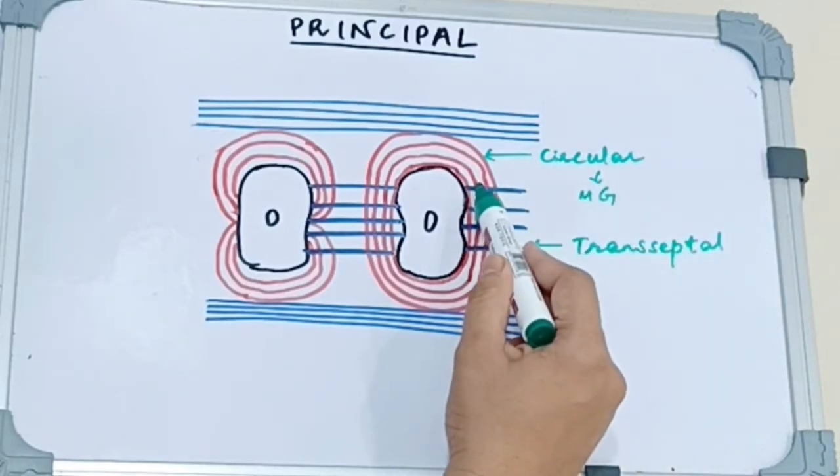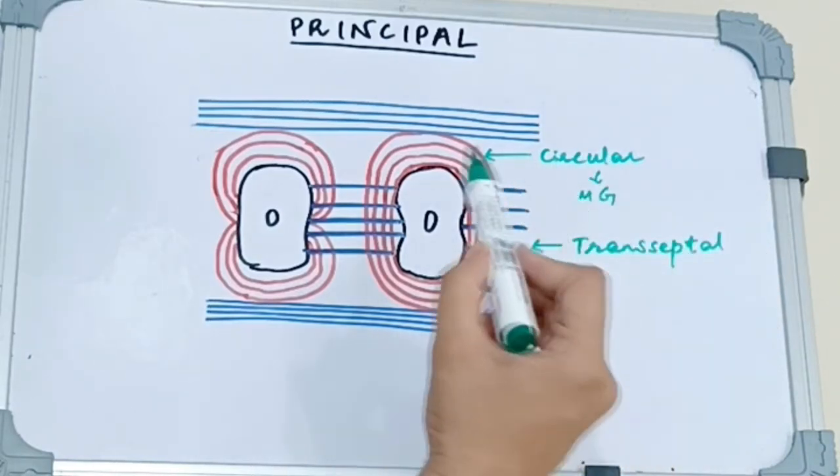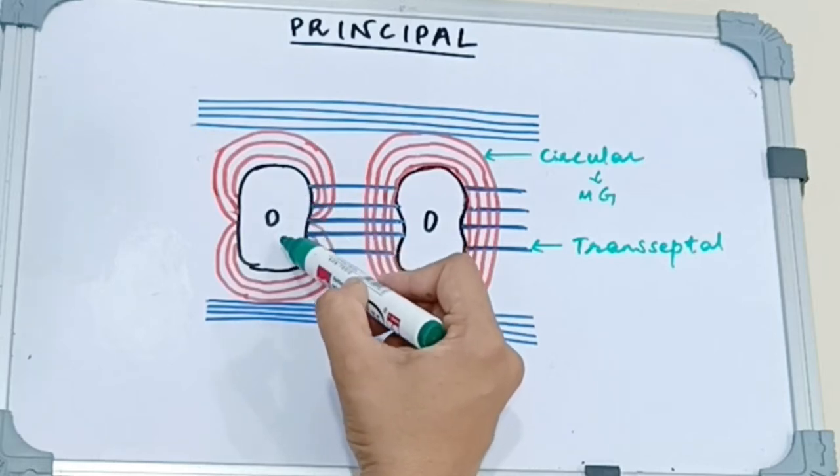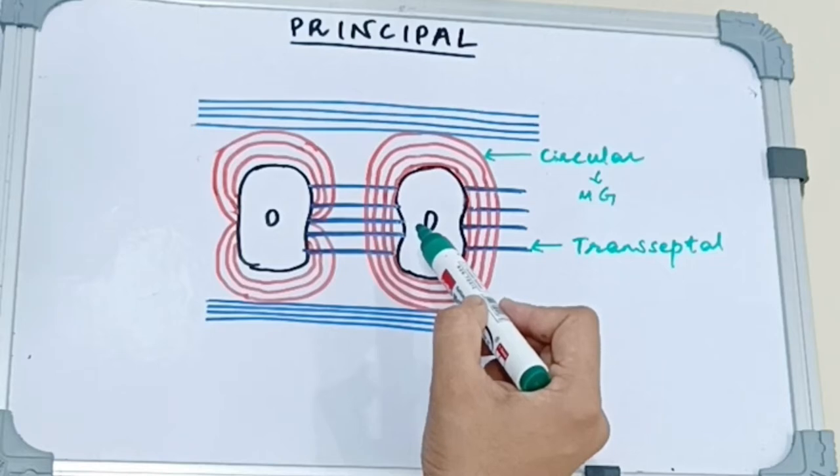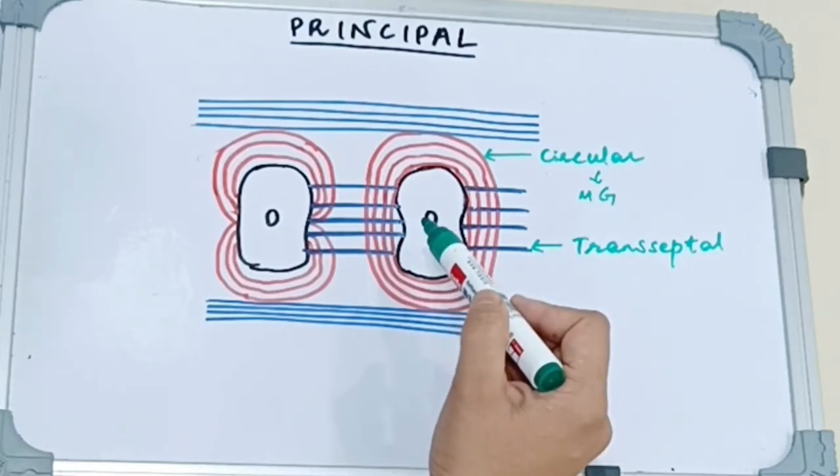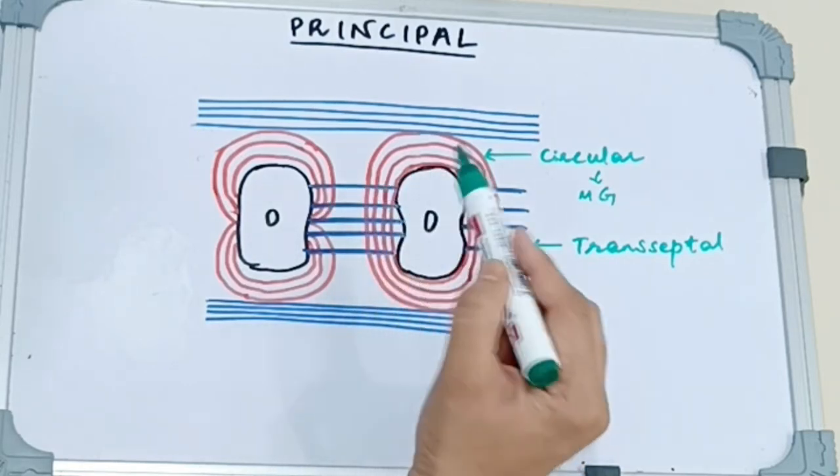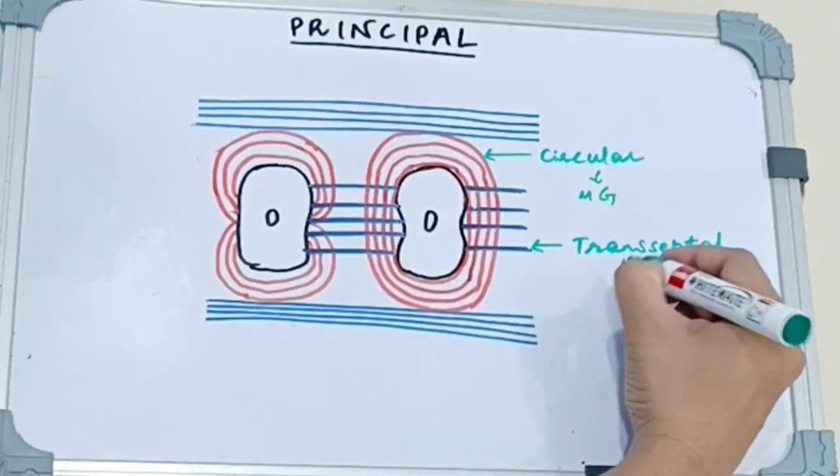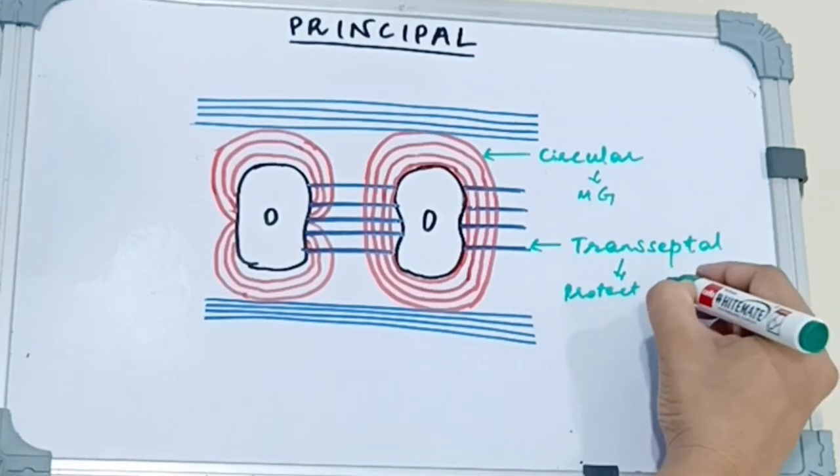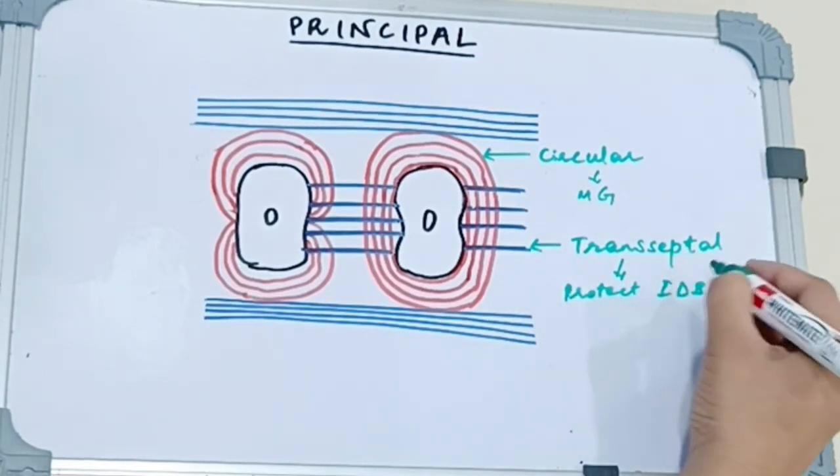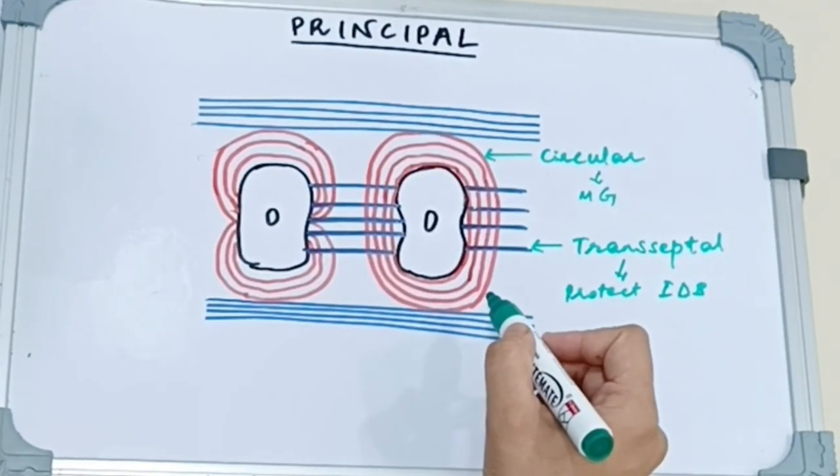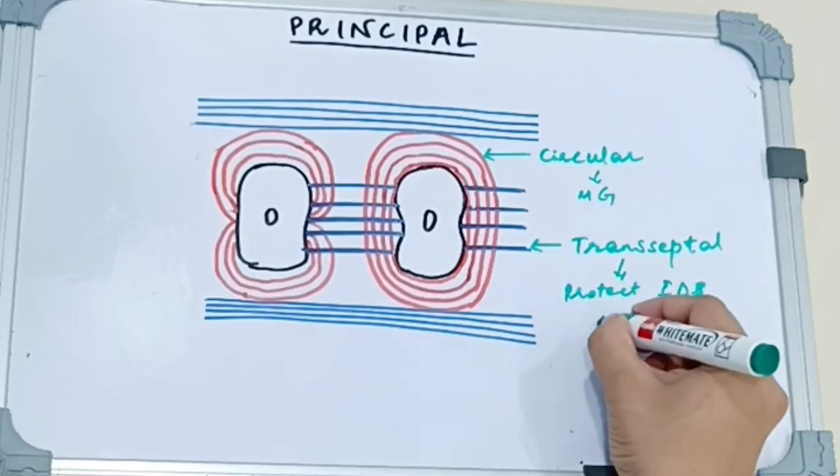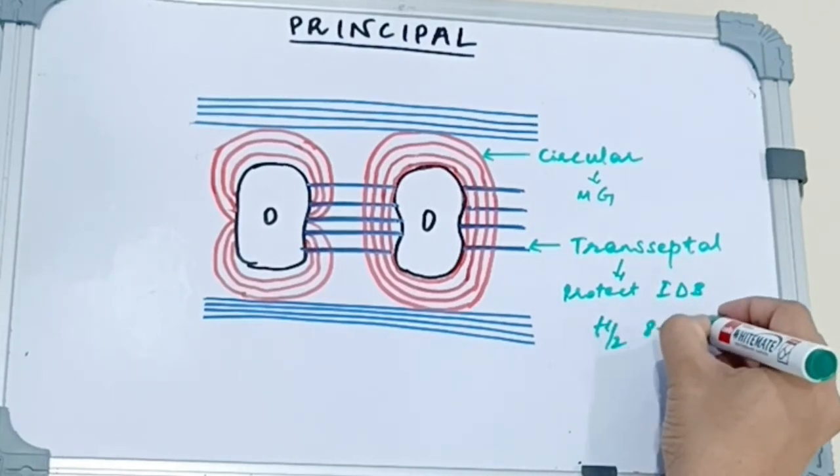Then we have lastly the transseptal fibers. These are present interproximally. So they connect the cementum of one tooth to the cementum of the other tooth. They lie in the area between the epithelium and the base of the sulcus and rest on interdental bone. Now since these are present interdentally what they do is they protect the interdental bone and also maintain the relationship of the adjacent teeth. These reform rapidly after excision with a half life of 8.4 days.